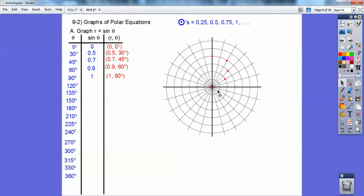Notice here's 0, 0, and then 0.5, 30. And my circles, look at my key to my circles. My circles are going by 0.25, so this would be 0.25, this would be 0.5 right there.